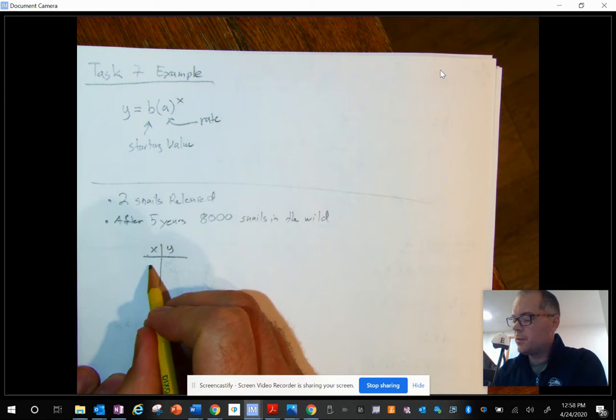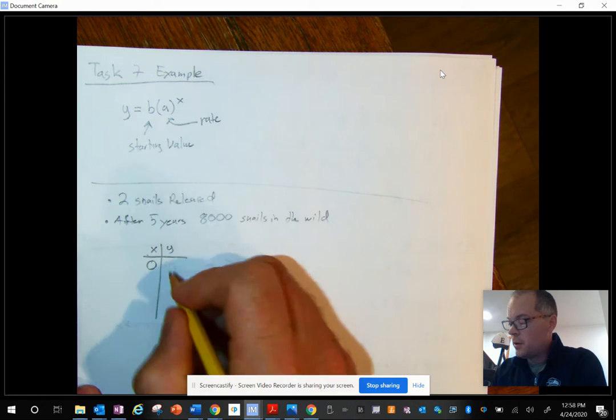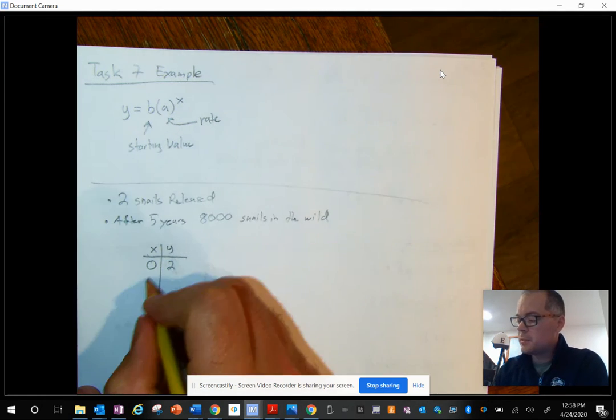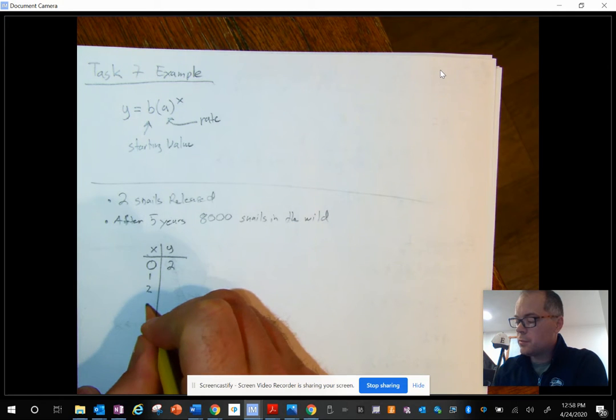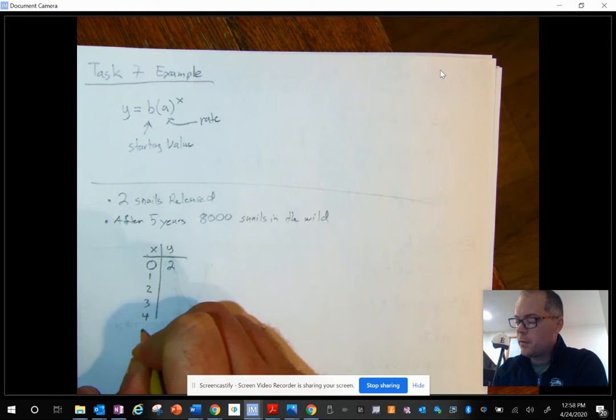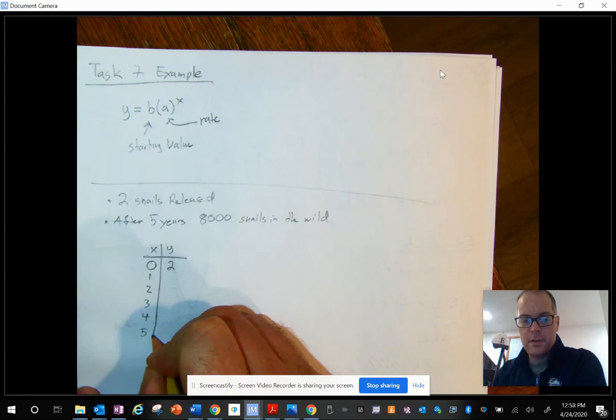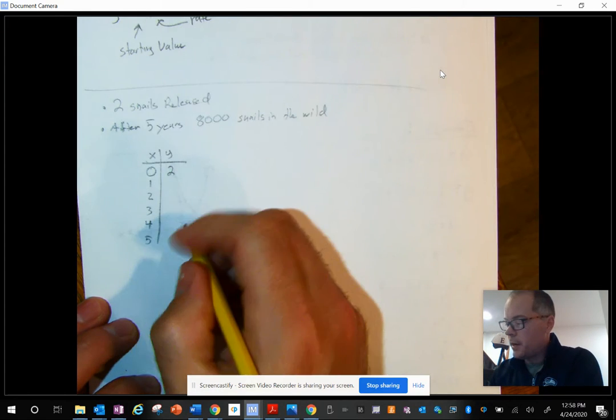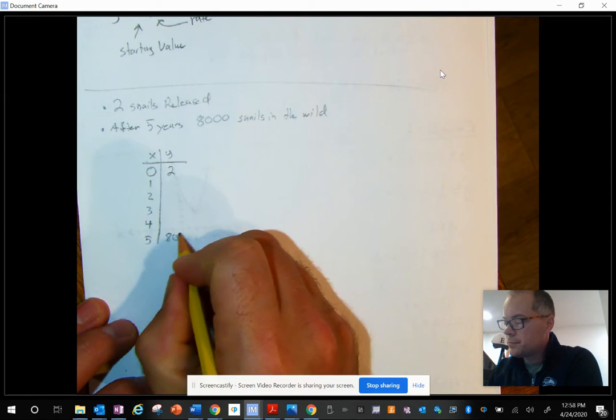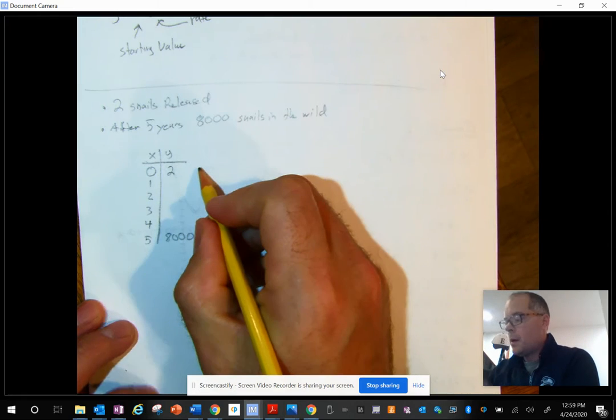The first value is when X is zero. So at year zero, there were two snails that were released. One, two, three, four, five. After the fifth year, there were 8,000 snails.